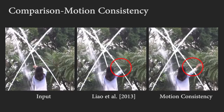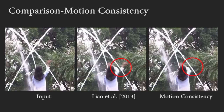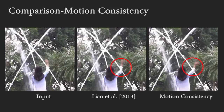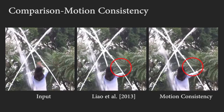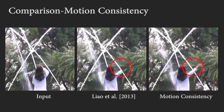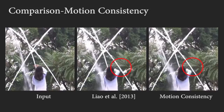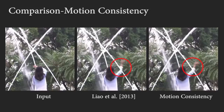Next we will highlight some key points during the optimization. First, the optimization includes a motion consistency term to reduce artifacts at the boundaries between static and dynamic regions, as shown in this waving arm example.